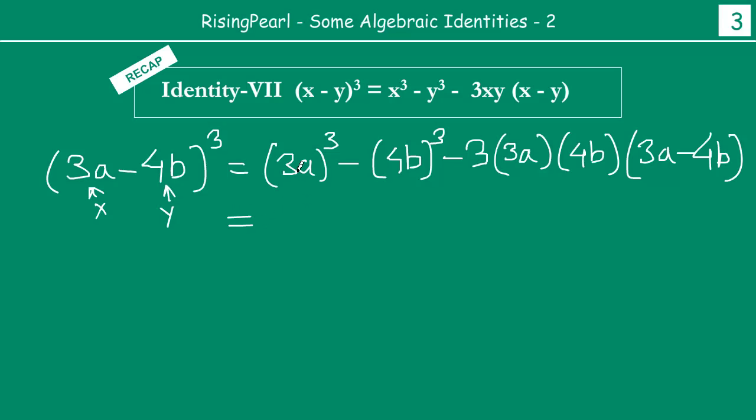And if you expand this, so 3, 3s are 9, 3s are 27, you get 27a cube minus 4, 4s are 16, 4s are 64, this becomes 64b cube, minus 3, 3s are 9, let's multiply the numbers first: 3, 3s are 9, 9 times 4 is 36, 36a times b is ab, and then we have 3a minus 4b.